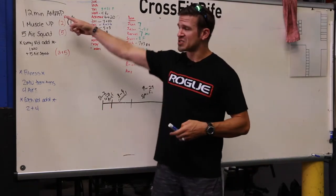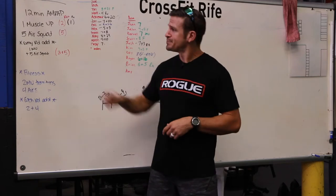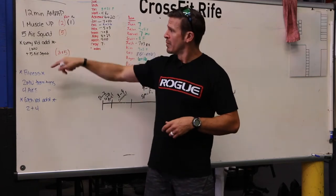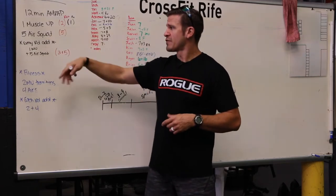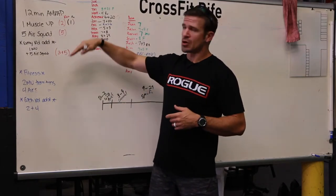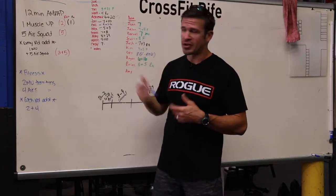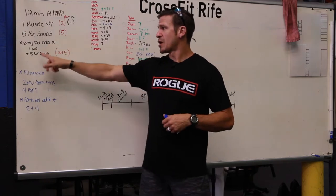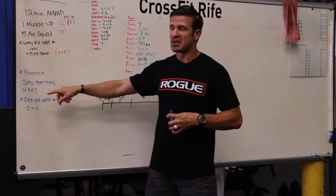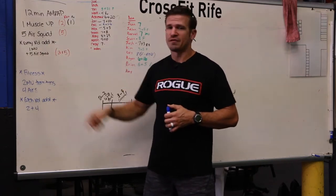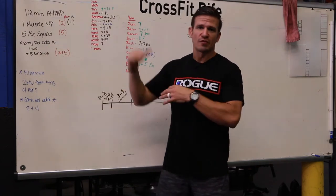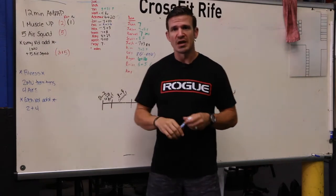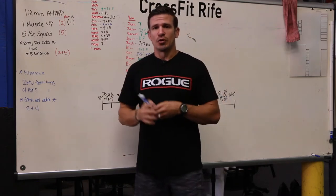The workout is a 12-minute AMRAP: one muscle-up, five air squats — that's the RX-plus version in our gym. And then every round you're going to add one muscle-up and then five air squats. So the volume increases as you go through.